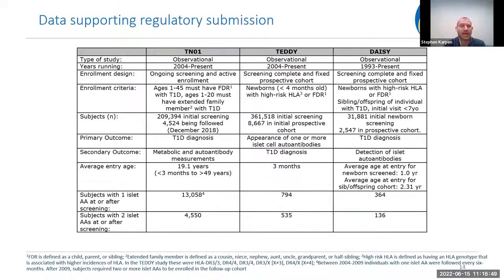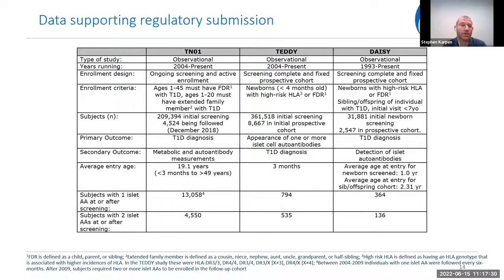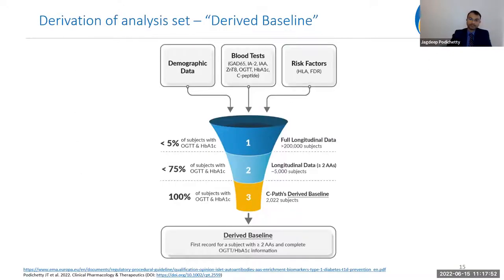These three longitudinal observational studies followed high-risk individuals from enrollment through the development of islet autoantibodies and then through the development of Type 1 Diabetes. They are large screening studies, whittling down from hundreds of thousands screened to thousands followed after development of islet autoantibodies. This patient-level data from thousands of participants forms the core of the modeling work.